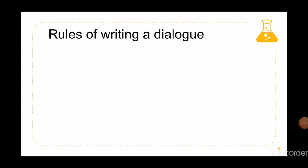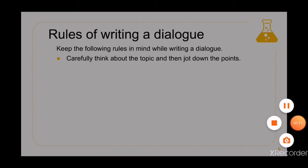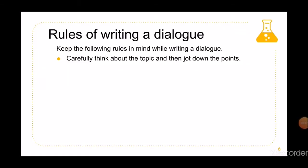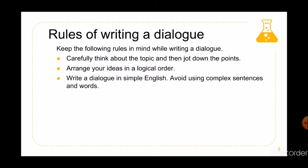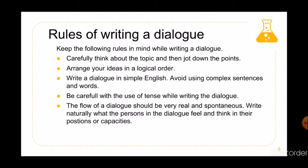Keep the following rules in mind while writing a dialogue. Carefully think about the topic and then jot down the points. Arrange your ideas in a logical order. Write a dialogue in simple English — avoid using complex sentences and words. The dialogue should be lifelike; do not use thick words or complex sentences to make it unreal. Be careful with the use of tense. The flow of a dialogue should be very real and spontaneous — write naturally what the persons in the dialogue feel and think in their positions.